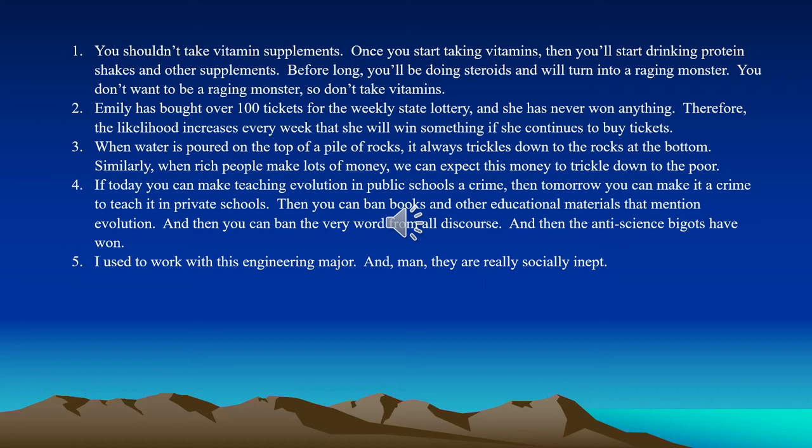Number three: when water is poured on top of a pile of rocks, it always trickles down to the rocks at the bottom. Similarly, when rich people make lots of money, we can expect this money to trickle down to the poor. This is an example of a weak analogy. There is very little similarity between water flowing through rocks and money flowing through an economy. Metaphorically they may be similar, but in actuality they're not really very similar at all, and that's what makes this a weak analogy.